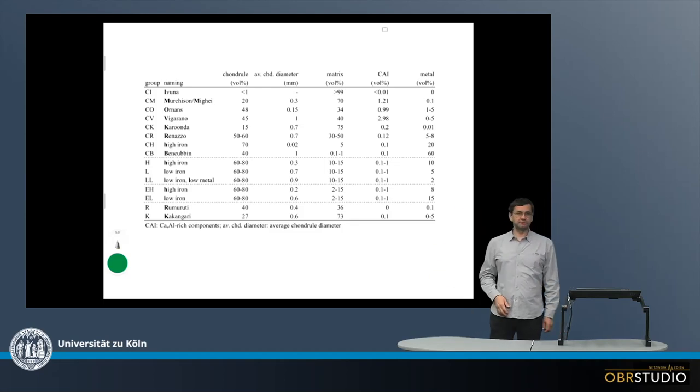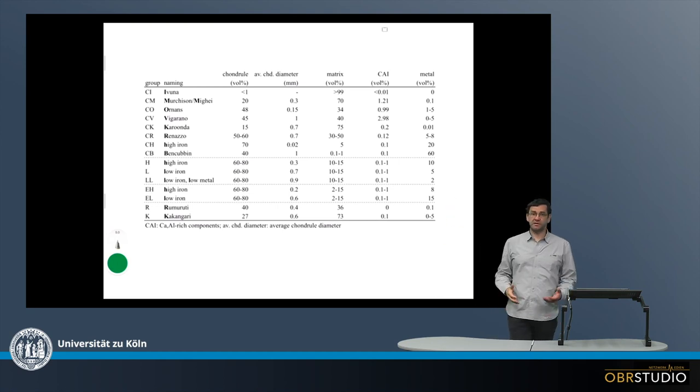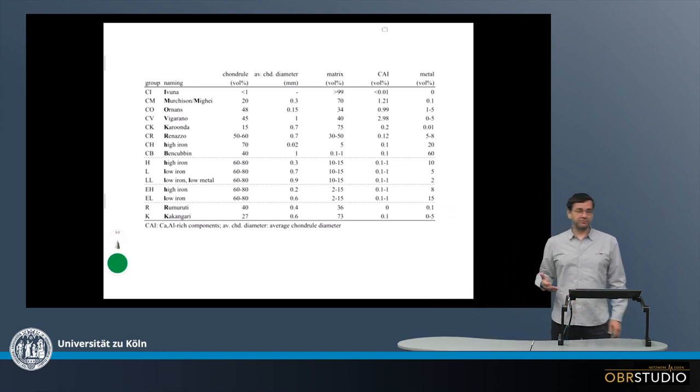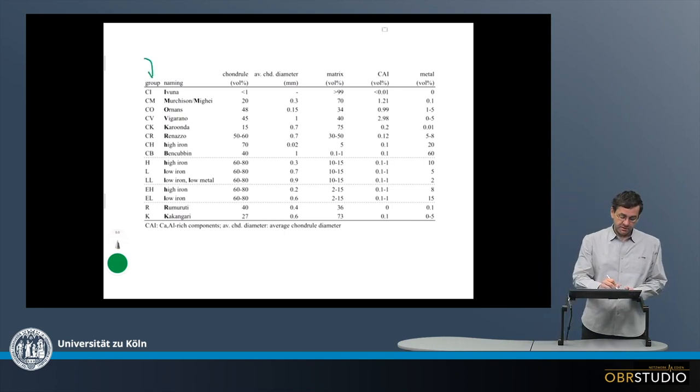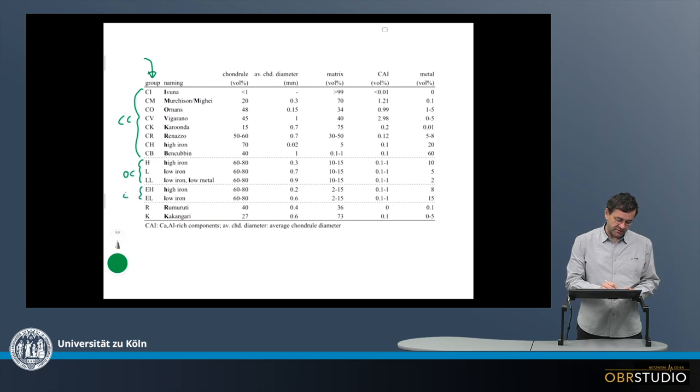This table here collects a number of fundamental properties of the various chondrite groups. In the first column are the various chondrites. So here are, for example, first the carbonaceous chondrites, then the ordinary chondrites, the enstatite chondrites, and then the rumrutiites and kakangariites.